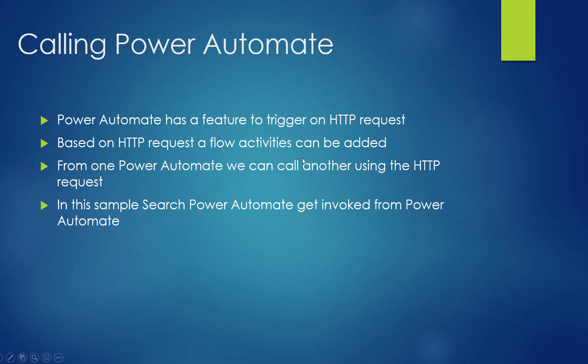Power Automate has a feature — the HTTP request — which can be triggered based on the HTTP GET or POST method. I'm going to use that feature to invoke a Power Automate within a Power Automate. The HTTP request can be used to send a body in JSON format, so I'm going to use that JSON invoke body format to send data from one Power Automate to another.